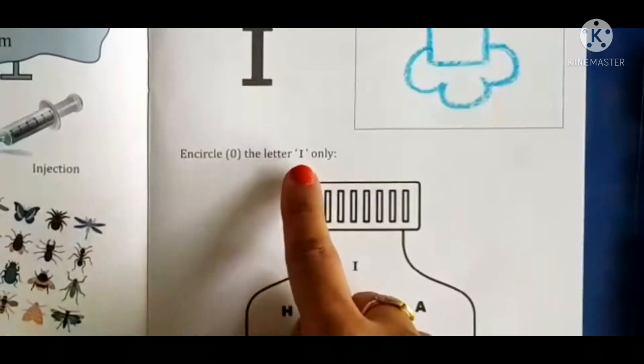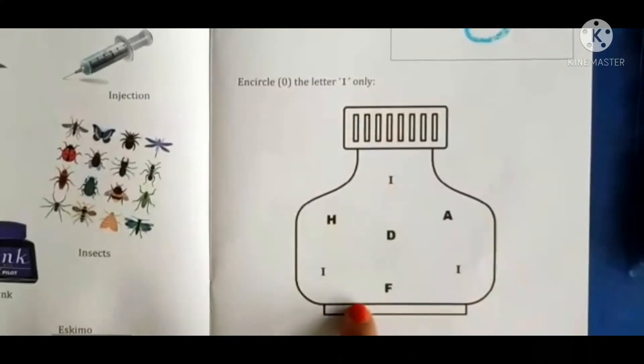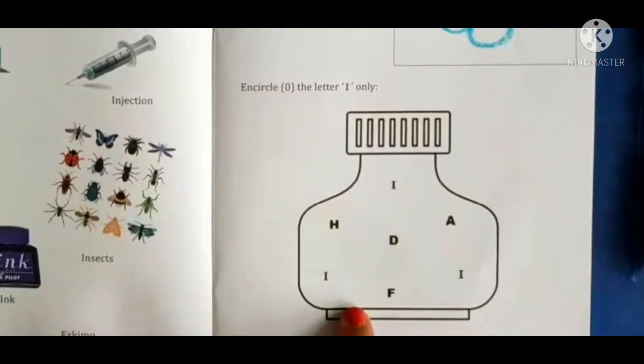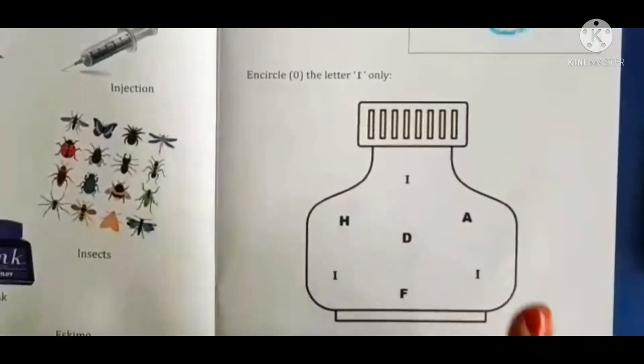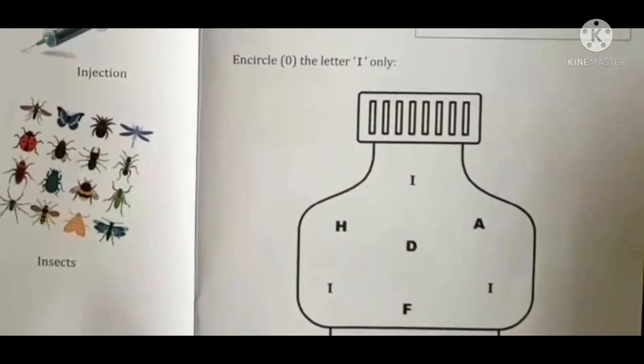Now encircle the letter I only. In this ink pot there are many letters written here. Yahan par bahut saare letters diye hain. Par humein sirf letter I ko circle karna hai. So let's find out letter I kahan kahan par hai.